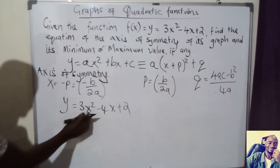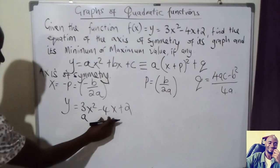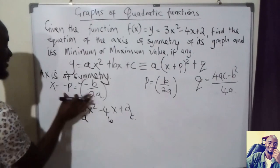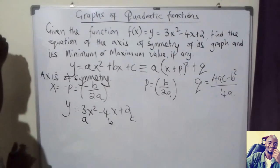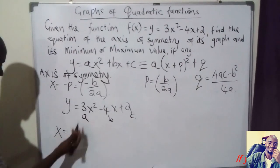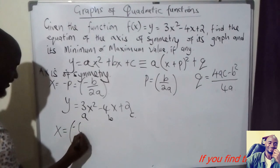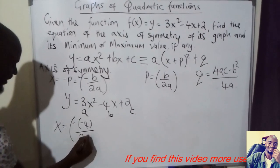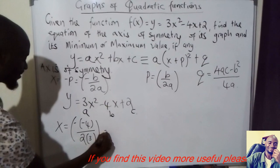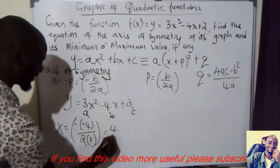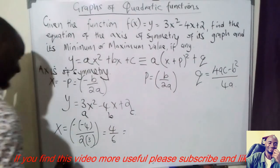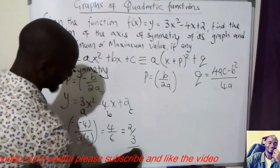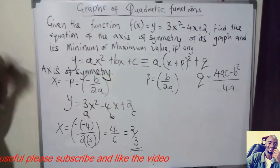From the equation, the coefficient of x squared is a, the coefficient of x is b, and the constant is c. So we can calculate the axis of symmetry. We have x equals negative — b is negative 4, so we put negative 4 — over 2 times a, where a is 3. That gives 4 over 6, which simplifies to 2 over 3. So x equals 2/3 is the axis of symmetry.